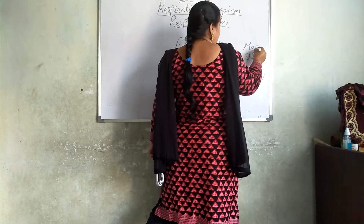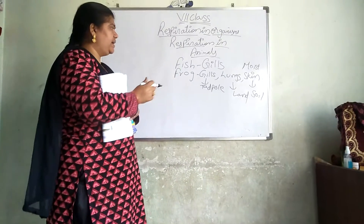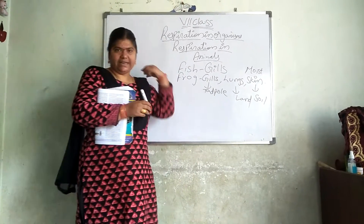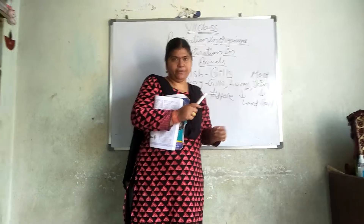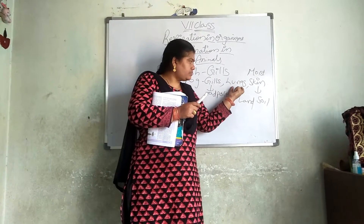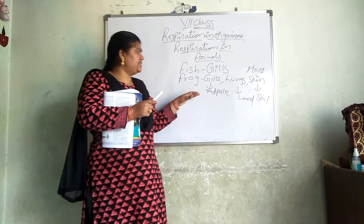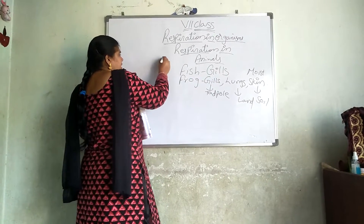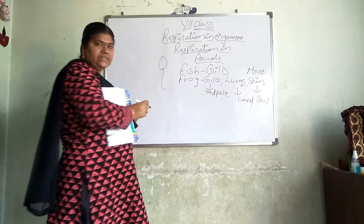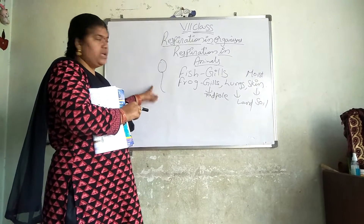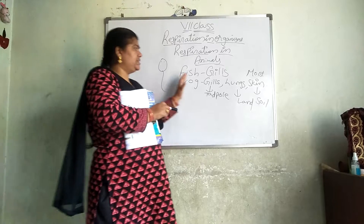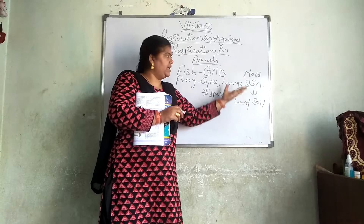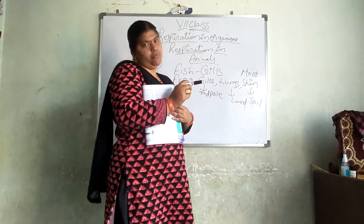We have to say that the skin is moist. Frog respires through three parts: gills, lungs, and moist skin. That is why we say frog is an amphibian — it can live in water, on land, and under the soil. When it is in the tadpole form — the head part and tail part — it uses its gills. When it is adult, it uses its lungs on land. When it is under the soil, it uses its moist skin.